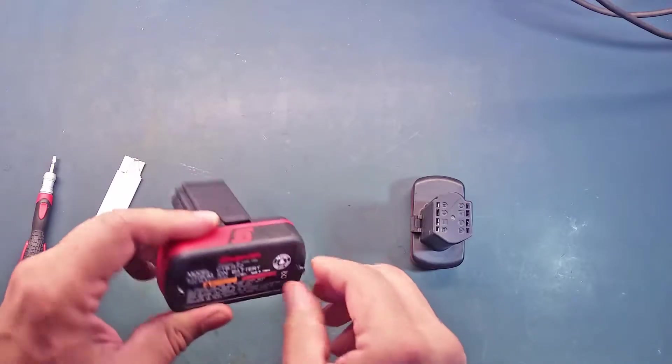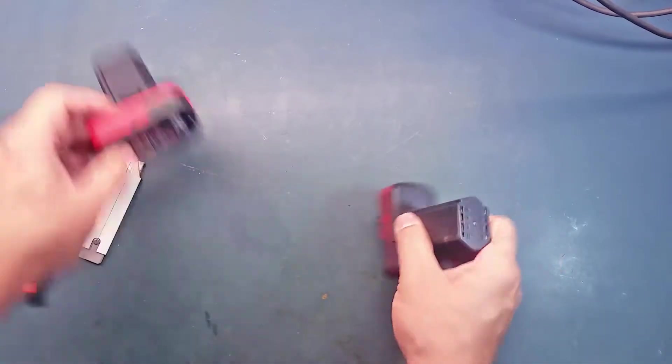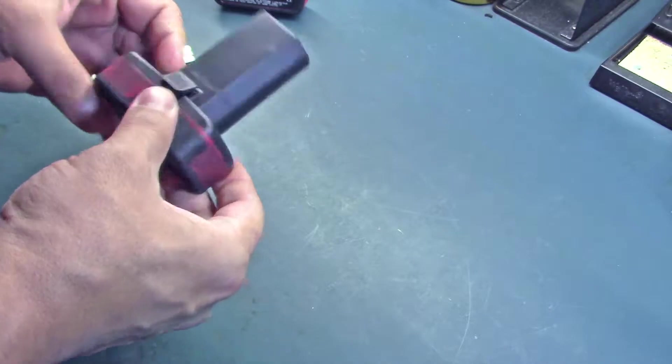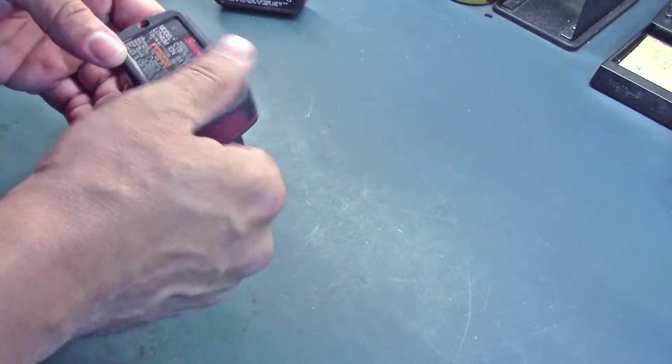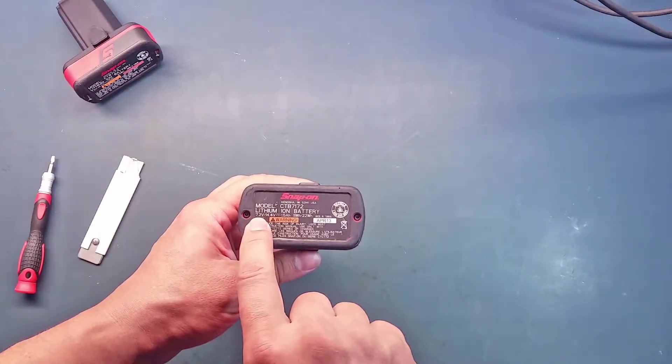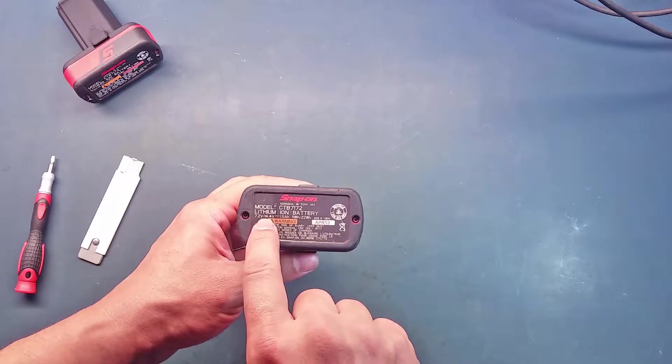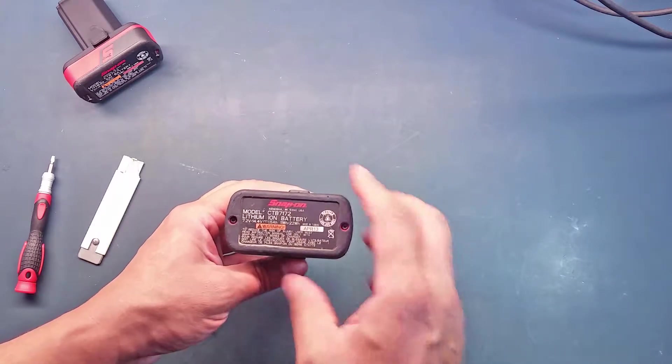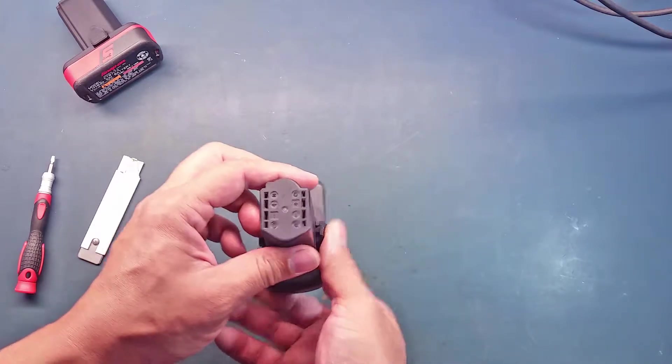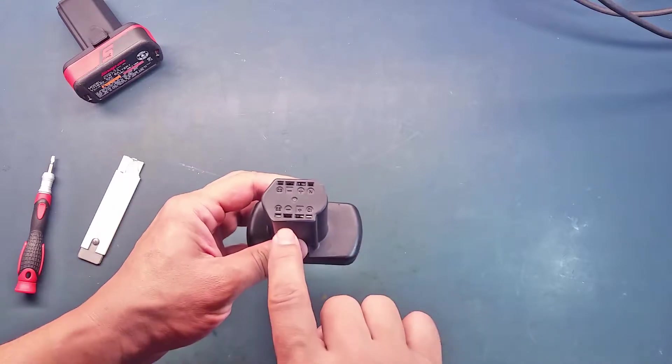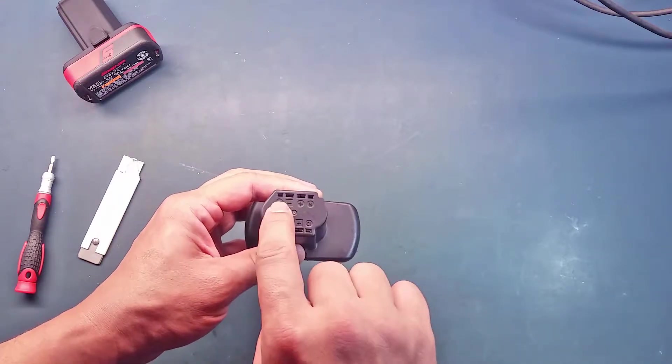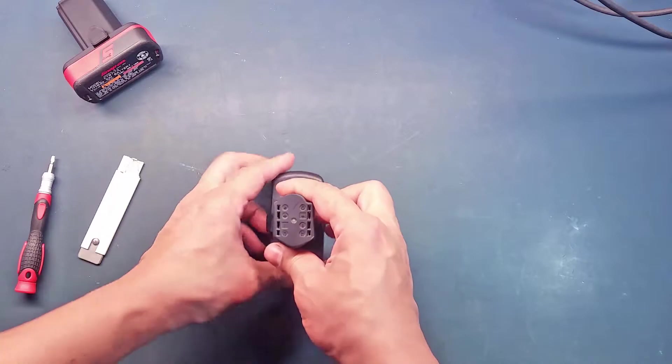The good thing about these kind of batteries is that they are not glued together, which makes them perfect for repair. Before taking it apart, how these batteries provide dual voltage is that they are split into two segments or built in parallel.